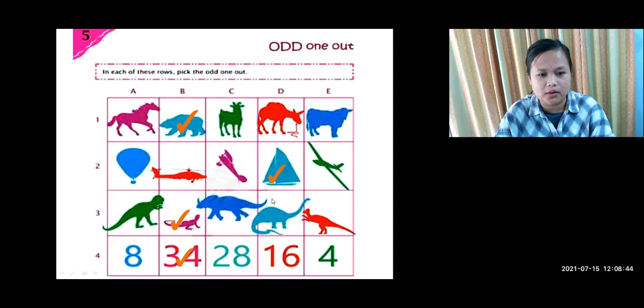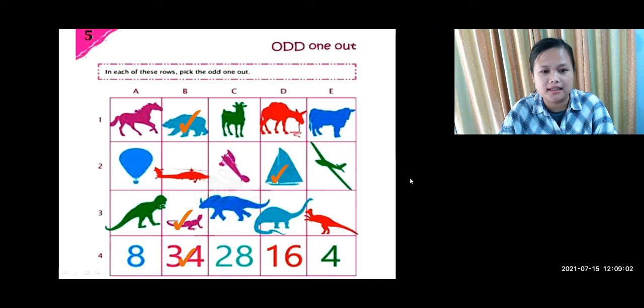The first picture is a horse, next is a bear, next is a goat, next is a donkey, and the last one is cow. So from this, what's the difference? The difference is that the others except the bear are all herbivores, which means they eat only plants. And bear is omnivore, which means it eats both plants and animals. So the odd one is the bear.